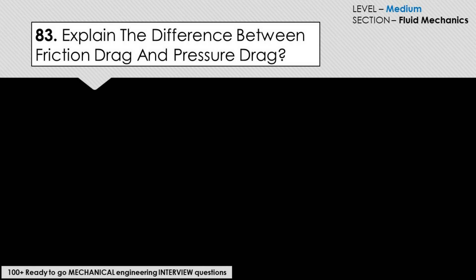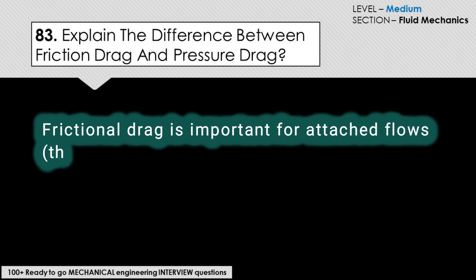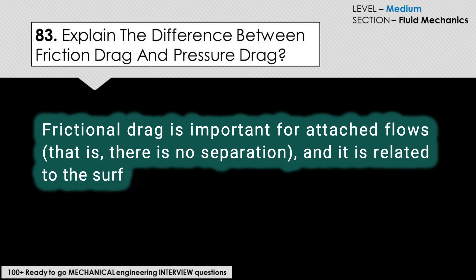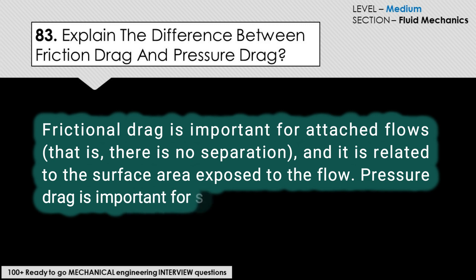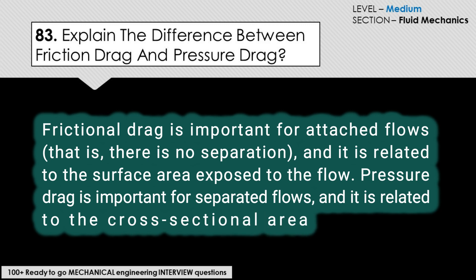Explain the difference between friction drag and pressure drag. Friction drag is important for attached flows — that is, there is no separation — and it is related to the surface area exposed to the flow. Pressure drag is important for separated flows and it is related to the cross-sectional area of the body.